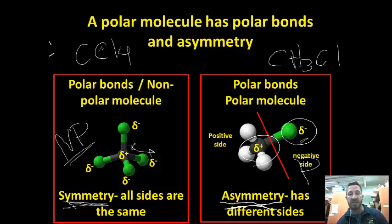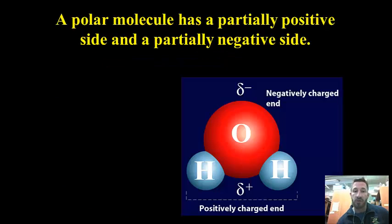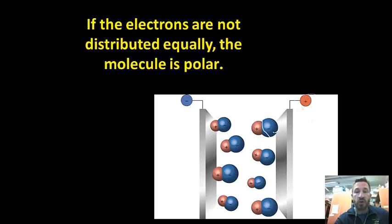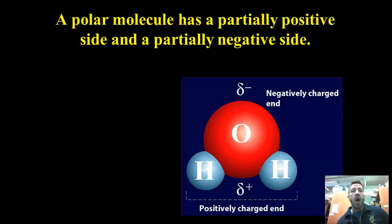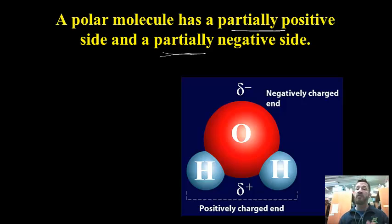If electrons are not distributed equally, the molecule is polar. For example, if we put polar molecules in an electric field, they would line up: the negative ends of the polar molecule would line up with the positive plate, and the positive ends with the negative plate. A polar molecule has a partially positive side and a partially negative side — and 'partially' means this is part of a covalent bond, meaning two nonmetals and not an ionic bond.